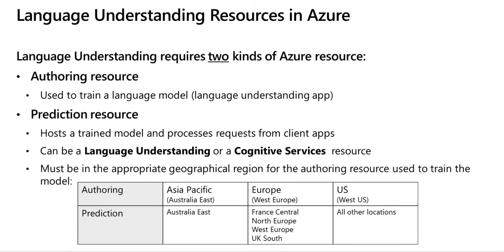The language service has various features including sentiment analysis, key phrase extraction, entity recognition, intent recognition, and text classification. Some of these features can be used without configuration of your language resources, such as language detection or sentiment analysis. Other features, such as conversational language understanding and custom named entity recognition, will require a model to be built for prediction.